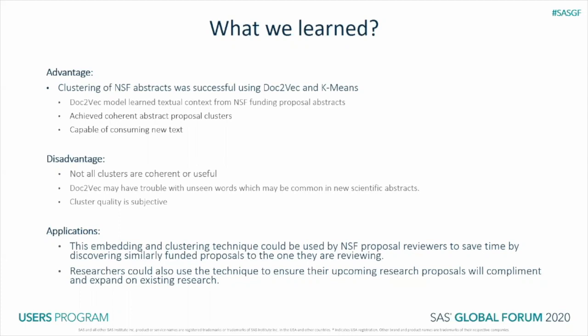A lot was learned over the course of this study. It gave us a great opportunity to explore natural language processing techniques in combination with unsupervised machine learning techniques for clustering and pattern recognition. This embedding and clustering technique has many advantages: it is capable of learning textual context, it demonstrated an ability to achieve coherent clusters, and it is capable of processing new text. However, not all clusters were coherent or particularly useful. Unseen words could potentially decrease the quality of contextual understanding for new proposals, as new discoveries and scientific progress are likely to produce words the model has not seen before. Additionally, it is a challenge to determine cluster quality, as the coherence of a cluster is determined subjectively.